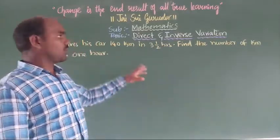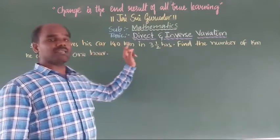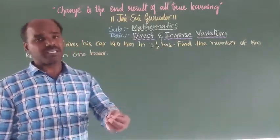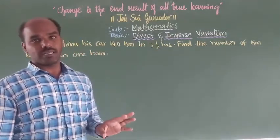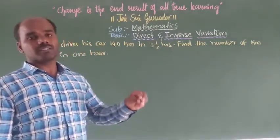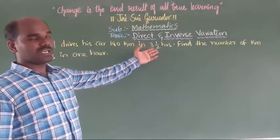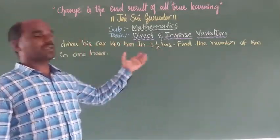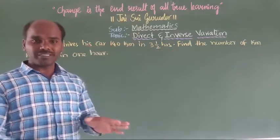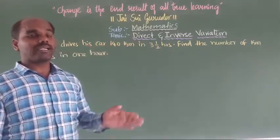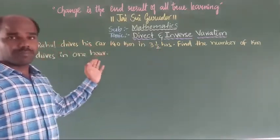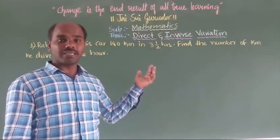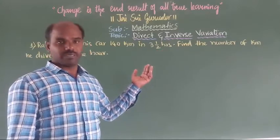Here we have time and distance. Time and distance is always direct variation only. Because for 3.5 hours, 140 kilometers are covered. So for 1 hour, the distance becomes less. When time decreases, the distance also decreases. So they are in direct variation.